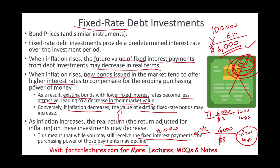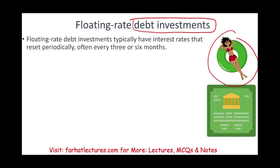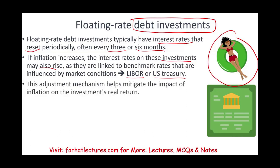You could also structure a debt investment with a floating rate — it changes and floats. Floating rate investments typically have interest rates that reset periodically, every three or six months. If inflation increases, the rate on these investments would rise as well, because they are linked to a benchmark such as LIBOR or U.S. Treasury yields. If the overall interest rate in the economy increases, what they pay you on the bond also goes up. This adjustment mechanism helps mitigate the inflation effect on your real return — instead of 6%, they pay you 7%.